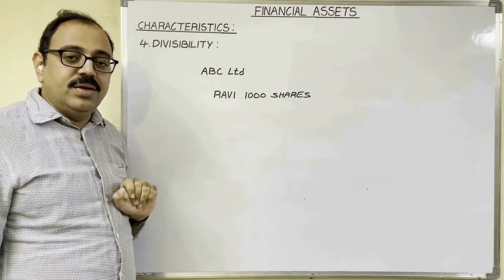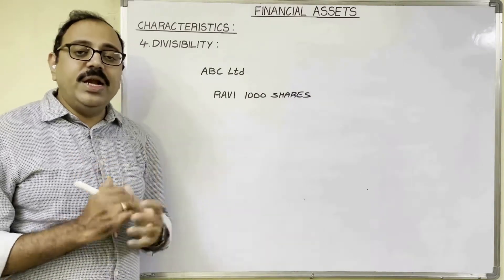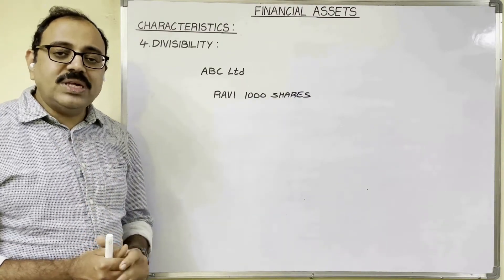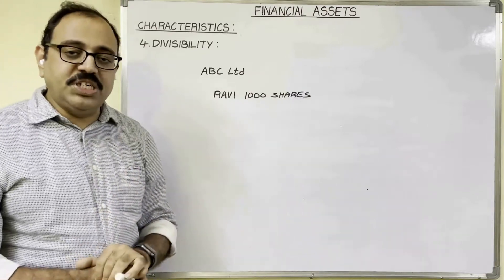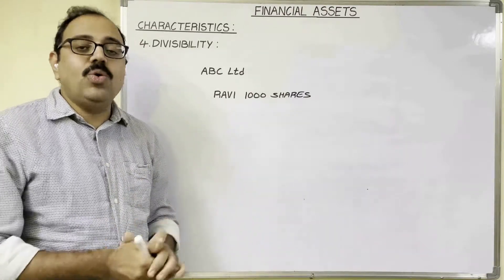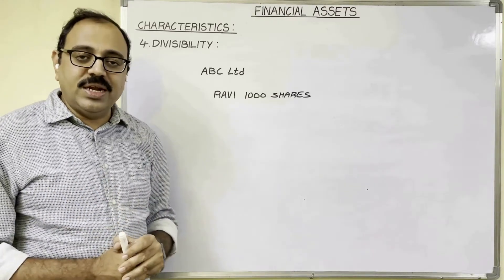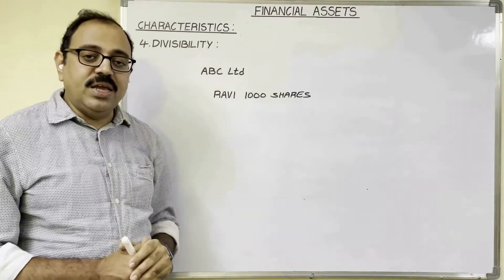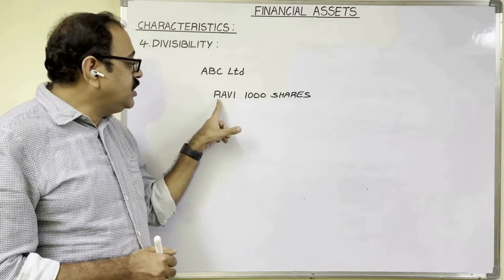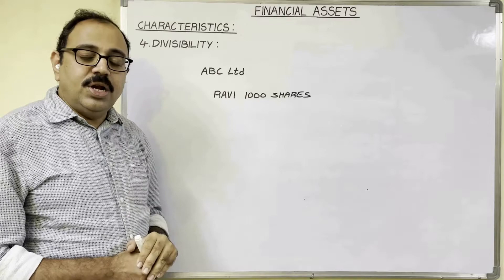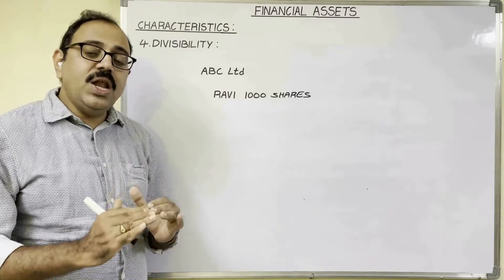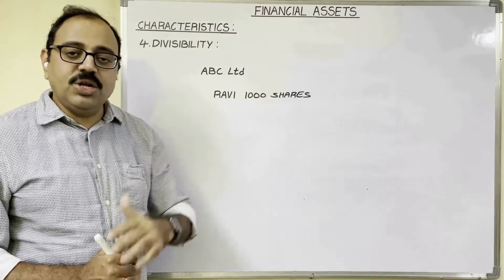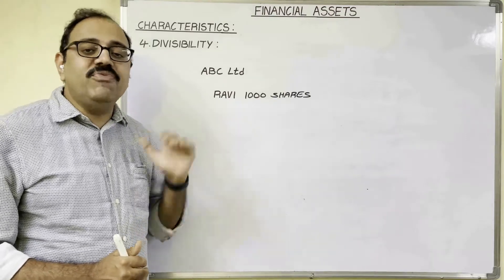The fourth feature is divisibility. In case of physical assets like buildings, machinery, and furniture, dividing them into small units is not possible. A manufacturing company wanting to sell an old machine must sell it as a whole. But in case of financial assets, divisibility is possible. For example, Ravi purchased 1000 shares of ABC Limited. He can sell all 1000 shares or just a part — for example, 600 shares — and keep the remaining 400.